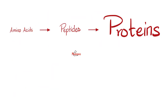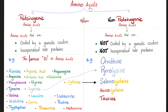Amino acids become peptides, and then they become proteins — the macromolecules. Amino acids are the micromolecules, the monomers; polymers. Amino acids are divided into proteogenic and non-proteogenic amino acids. The difference was discussed in the previous video in this playlist called MCAT biochemistry.